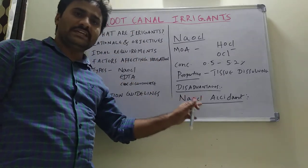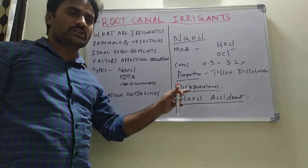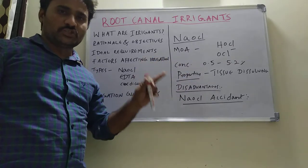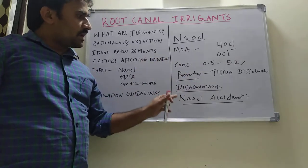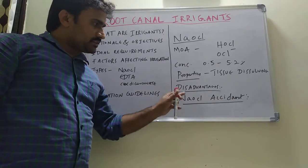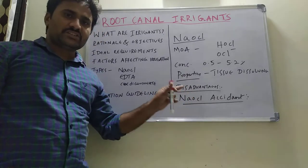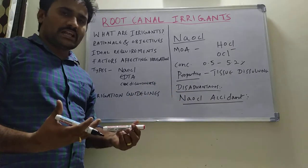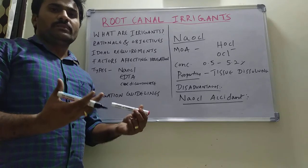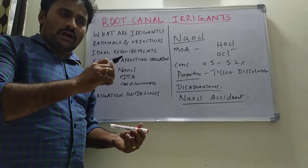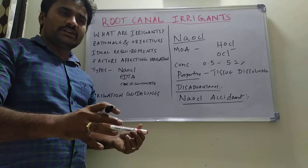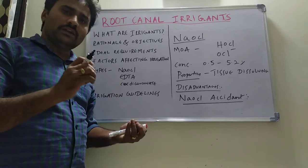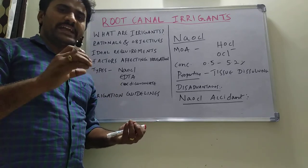Sodium hypochlorite accident is the inadvertent, meaning unwanted, extrusion of sodium hypochlorite from the root apex into the surrounding periradicular tissues. This is the most common disadvantage. After a sodium hypochlorite accident, the periradicular tissues become inflamed, the root canal space floods with blood immediately, and the patient complains of severe excruciating pain.